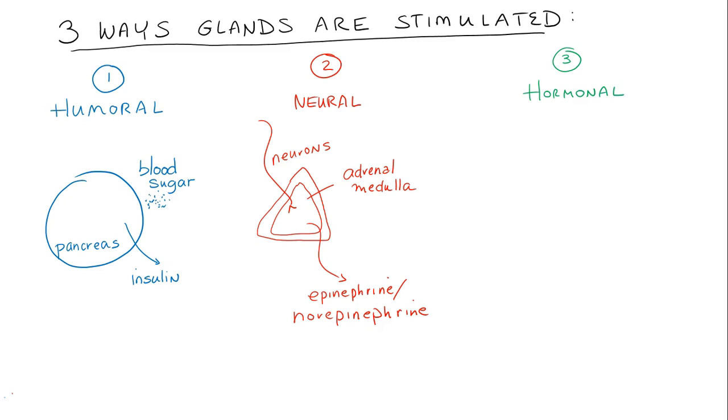The third way that glands are stimulated is hormonal. For example, the hypothalamus will send out releasing hormones to the pituitary, and then the pituitary sends out stimulating hormones, for example, to a gland such as the thyroid gland. And then the thyroid gland, which is involved in the control of metabolism, will send out the hormone thyroxin.